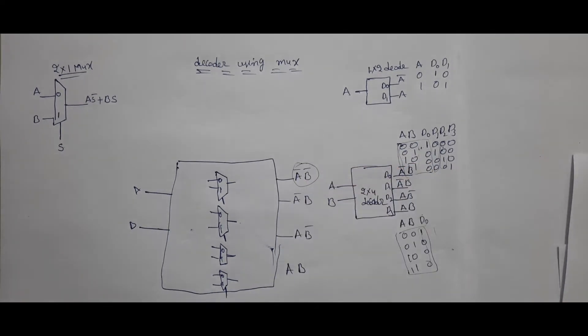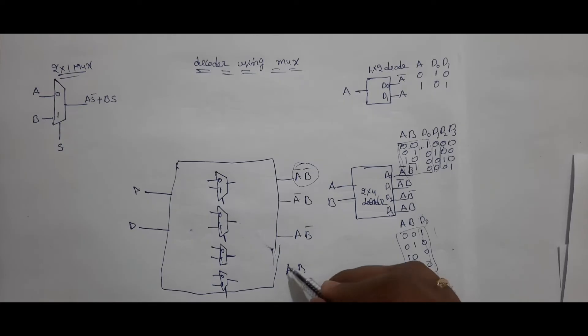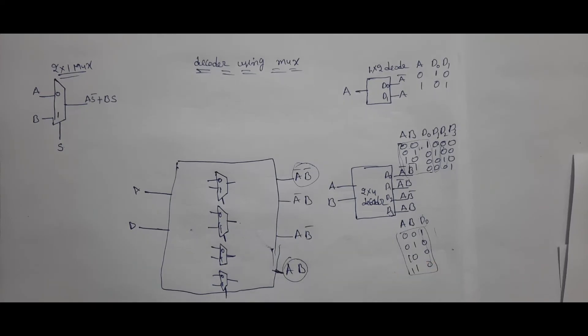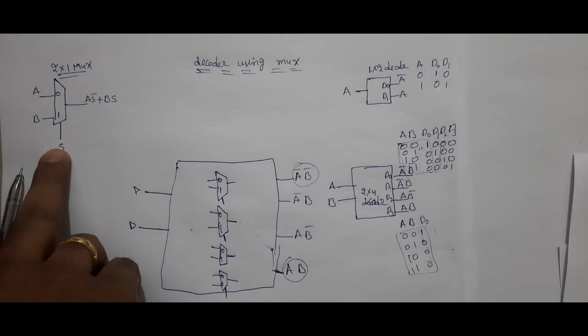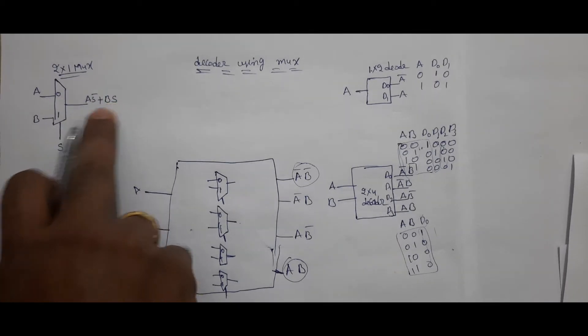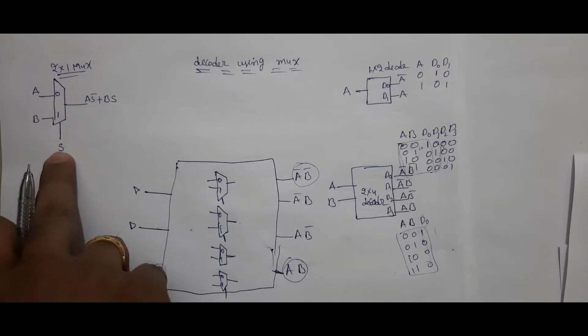Now see how you will get A-bar B-bar, A B, A-bar B, and A B-bar. First, how you will get A B: suppose you give B at the selection line, you are getting B at the selection line.